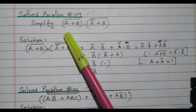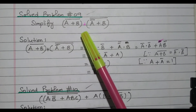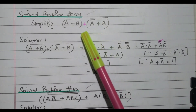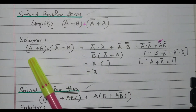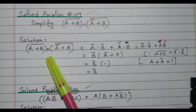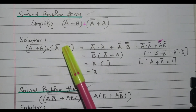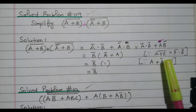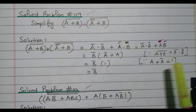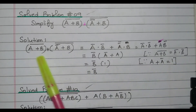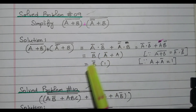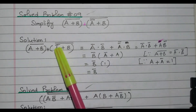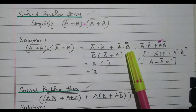The second problem is: A plus B the whole bar plus A-bar plus B the whole bar. We need to simplify this expression. It is written as A plus B the whole bar plus A-bar plus B the whole bar plus A-bar dot B-bar. Based on that, this can be written as A-bar dot B-bar, and A-bar plus B the whole bar becomes A-double-bar dot B-bar.